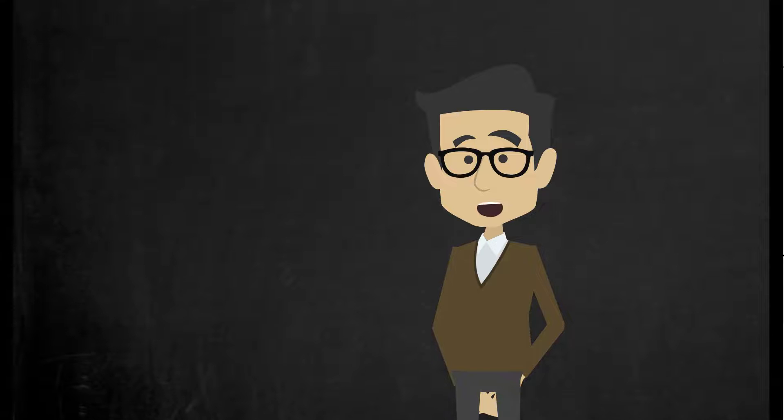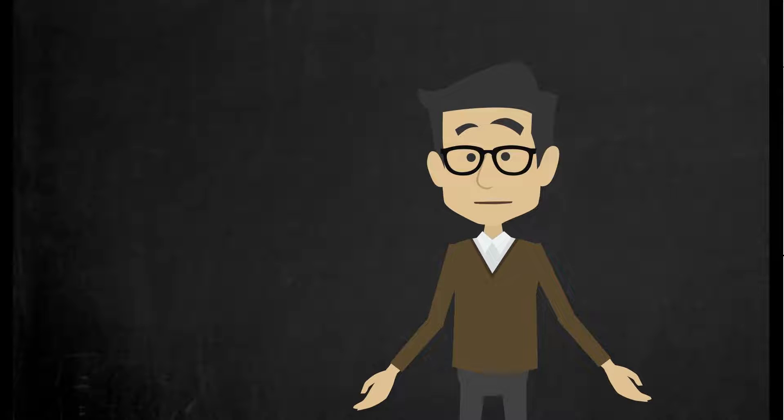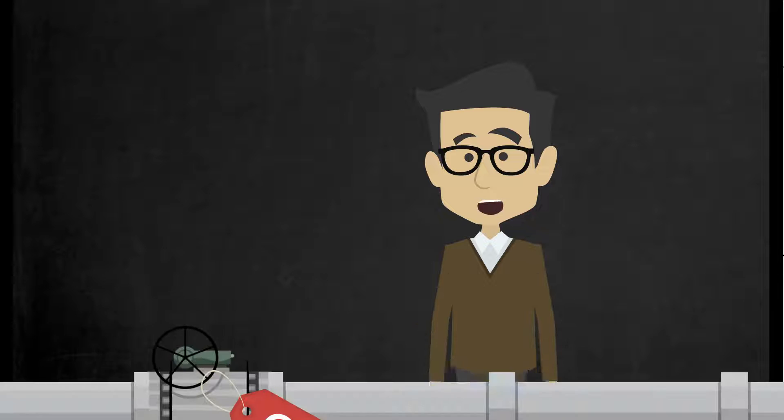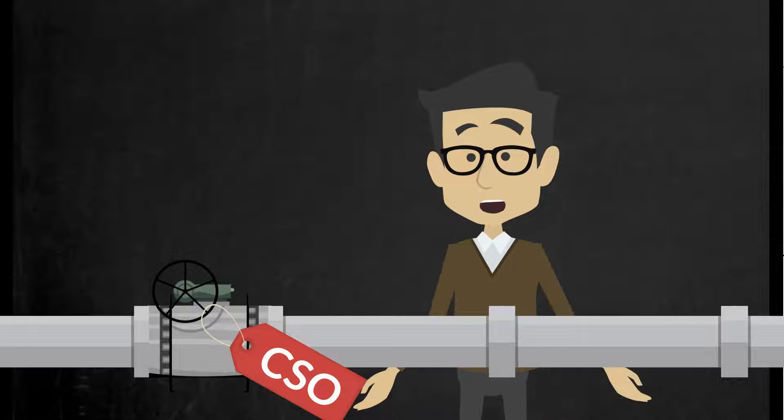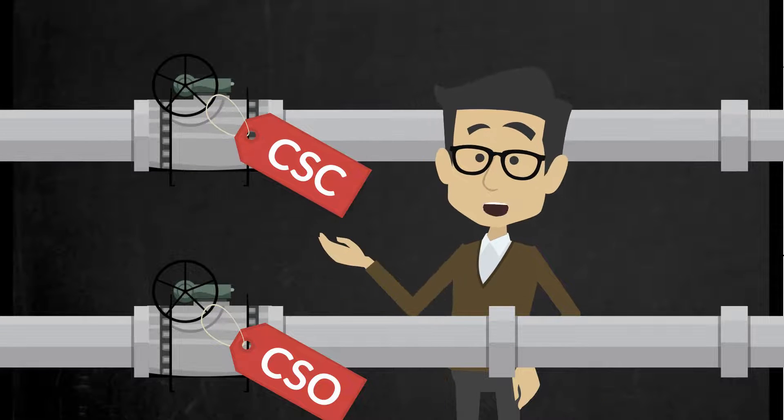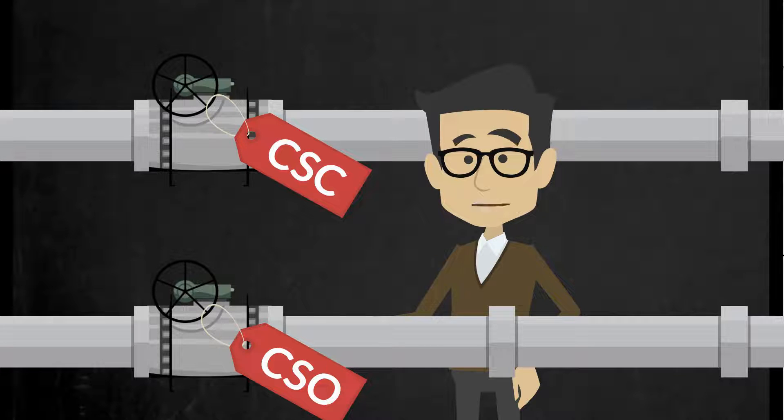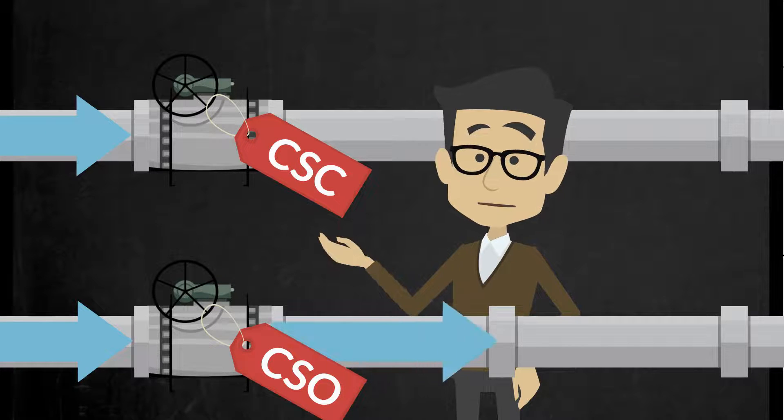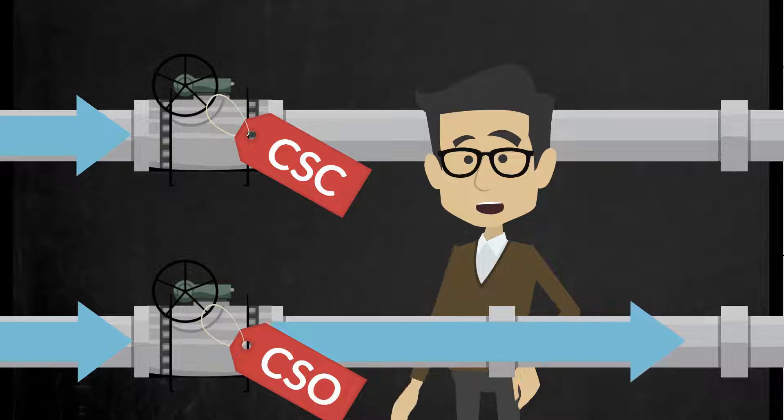That brings me to the next detail to look out for. Car seals. Car seal valves, denoted with a CSO for car seal open or CSC for car seal closed, are valves that are under administrative control to ensure that they are in the correct position. This is done to mitigate human error in a design.